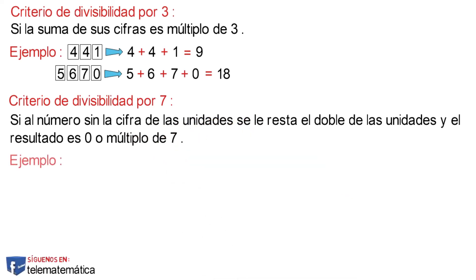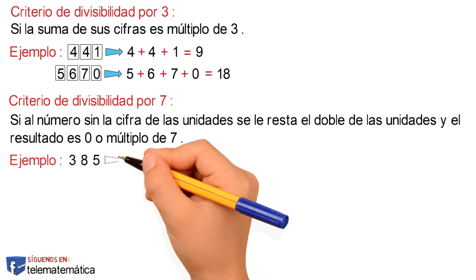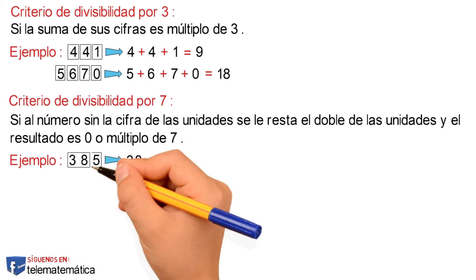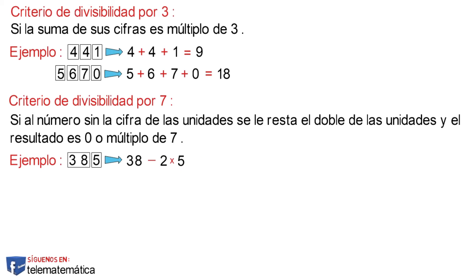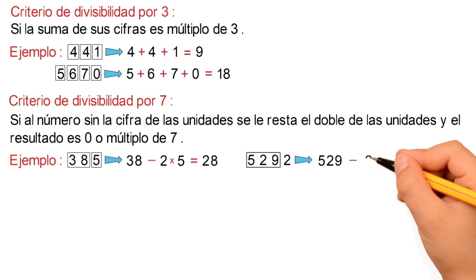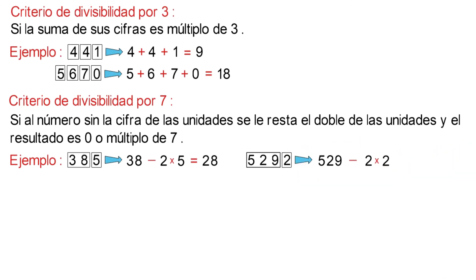Veamos un ejemplo. Tenemos el número 385, donde 38 menos 2 que multiplica a la cifra de las unidades que es 5, y resolviendo las operaciones nos quedaría 28. Y este número 529, donde 52 menos 2 que multiplica a la cifra de las unidades que es 9, y resolviendo las operaciones nos quedaría 525. Y este número es múltiplo de 7, ya que 7 por 75 es igual a 525.